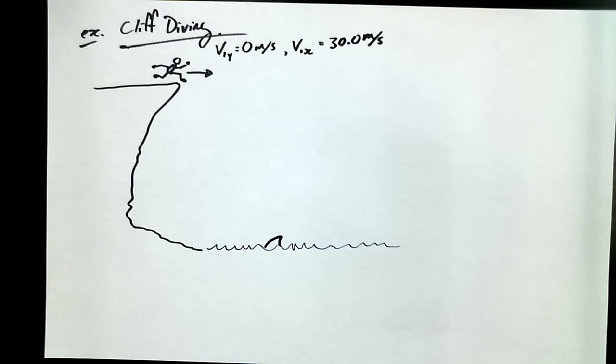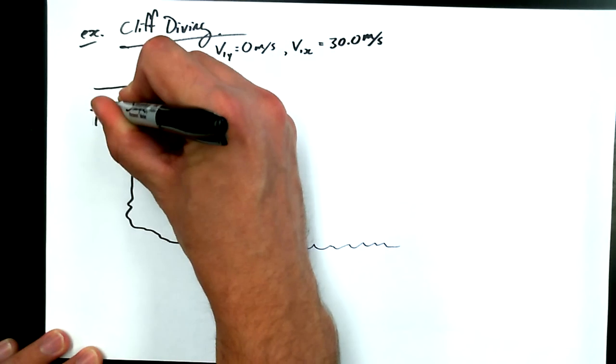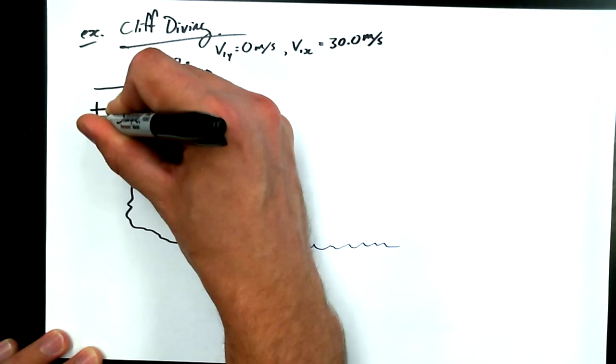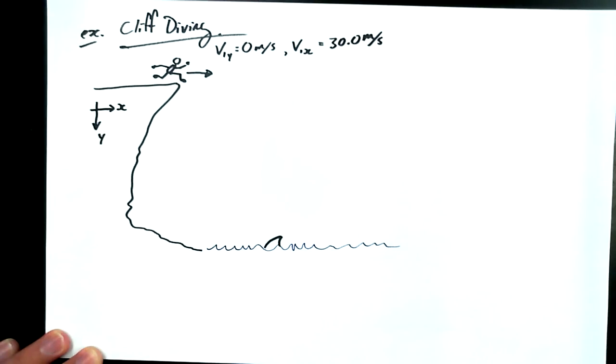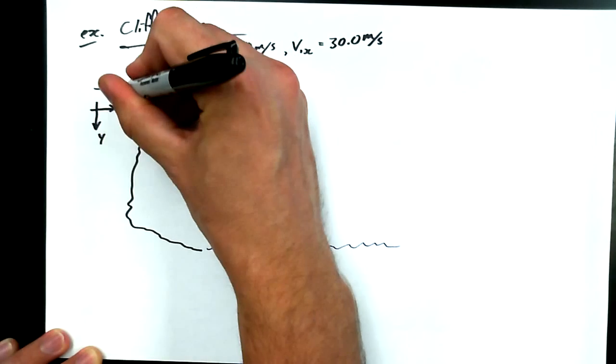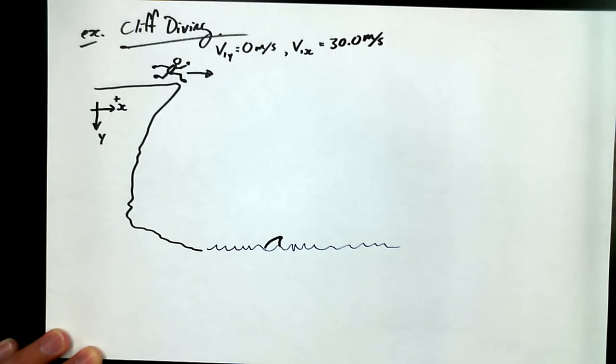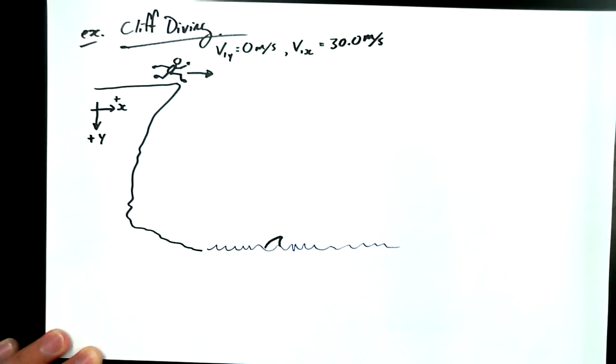Student asks: If he's running off the cliff, why is his initial velocity 0? His initial velocity in the y direction. I want to be very clear about this. This is the direction that's x, this is the direction that's y. And for argument's sake, I'm going to make that direction the positive x direction, and that direction the positive y direction.